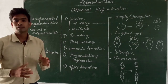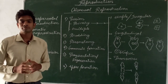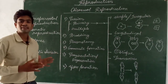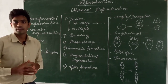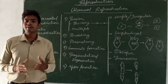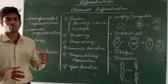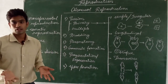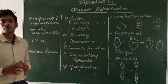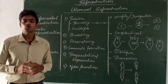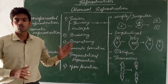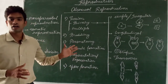The next important point is that no fusion of gametes takes place, so it is the somatic cells which take part in this reproduction — that is why it is called somatic reproduction. Somatic cells are the normal diploid cells. All offsprings are identical to one another and are exact copies of their parents, hence they are called clones.